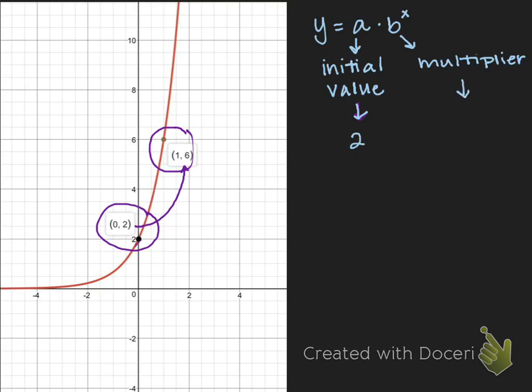And in this case, we are going to get a b-value, or a multiplier value, of 3. So our final equation is going to be y equals 2 times 3 to the power of x.